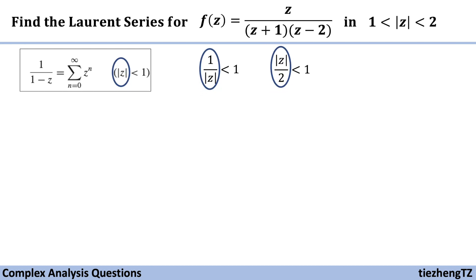So now they are the same. Next we're going to do something with the given equation. We're going to change z over (z+1)(z-2) into the form that we can have 1 over z and z over 2.